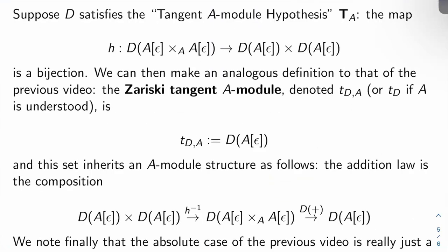So suppose D satisfies what we'll call the Tangent A-Module Hypothesis T_A. This is akin to the tangent space hypothesis T_k from the last video. And if you were paying attention last video, the definition of the tangent A-module hypothesis is not surprising.